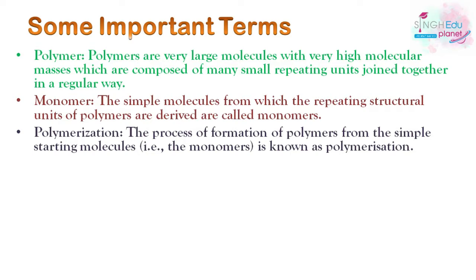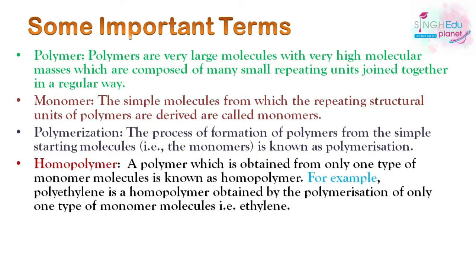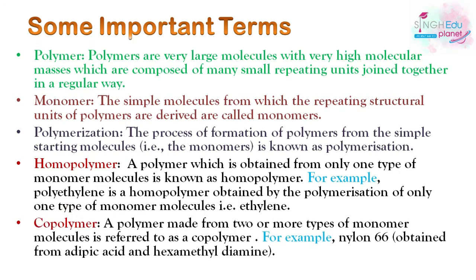There are two types of polymers. First is homopolymer — a polymer obtained from one type of monomer, like polyethene, in which the same units are repeated. Second is copolymers — polymers made from two or more different types of monomers, for example nylon 6,6, which is obtained from adipic acid and hexamethyl diamine.